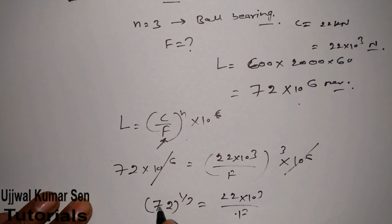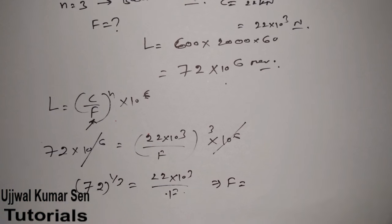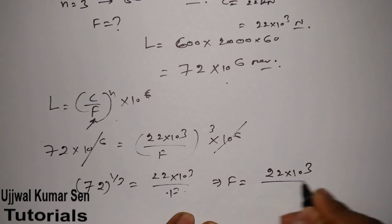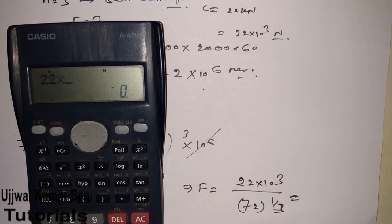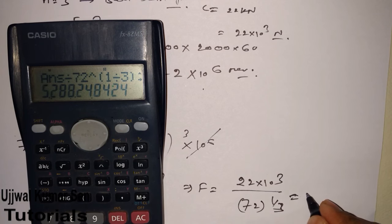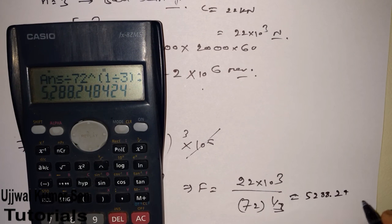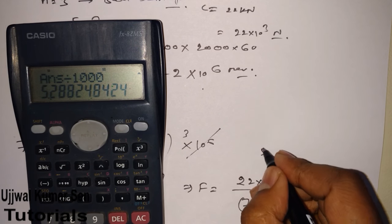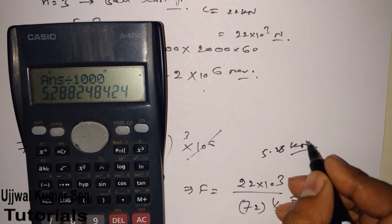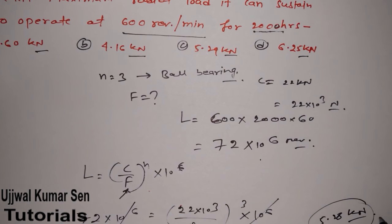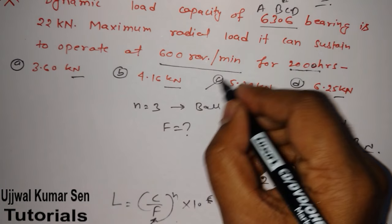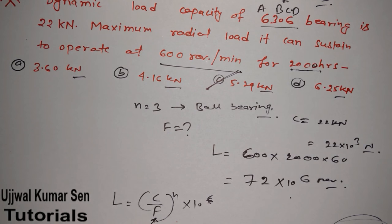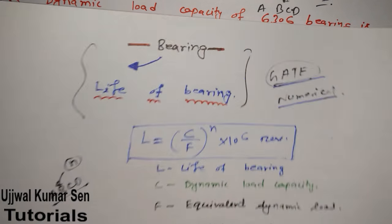After simplification: F = 22 × 10^3 / 72^(1/3). Calculating this gives F ≈ 5.29 kN. So the maximum radial load the bearing can sustain is approximately 5.29 kN. The answer matches option C. This is how we solve GATE questions related to bearing life — we covered ball bearing specifically, which is also known as rolling contact bearing.